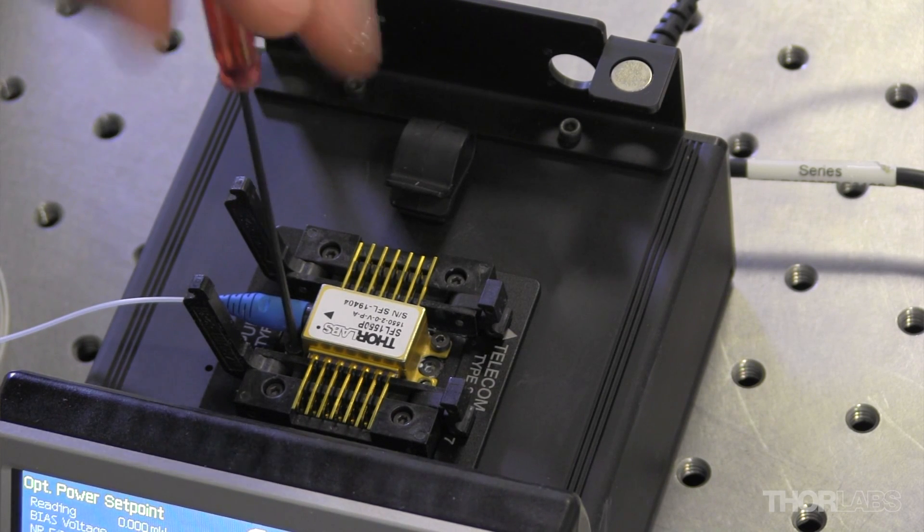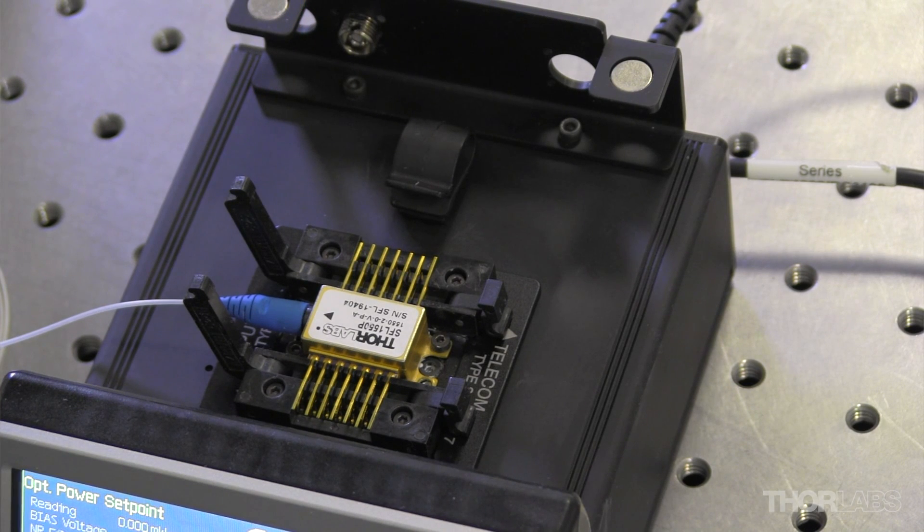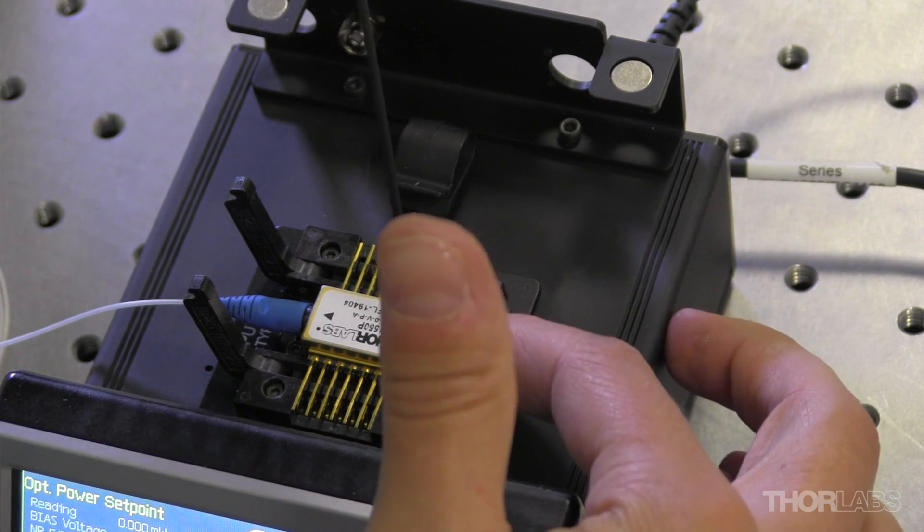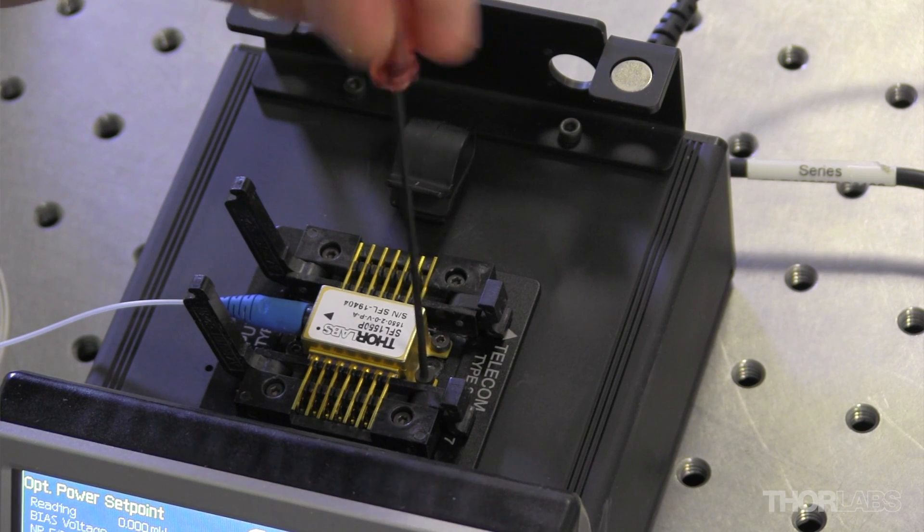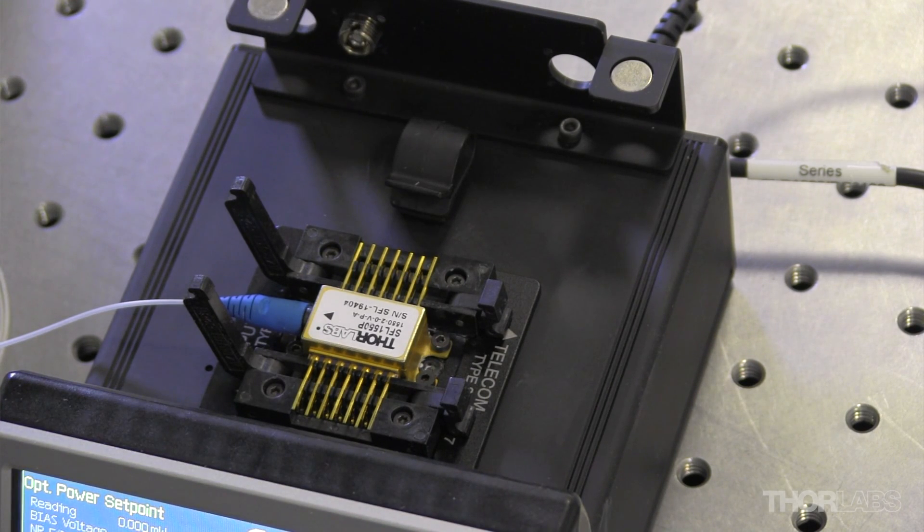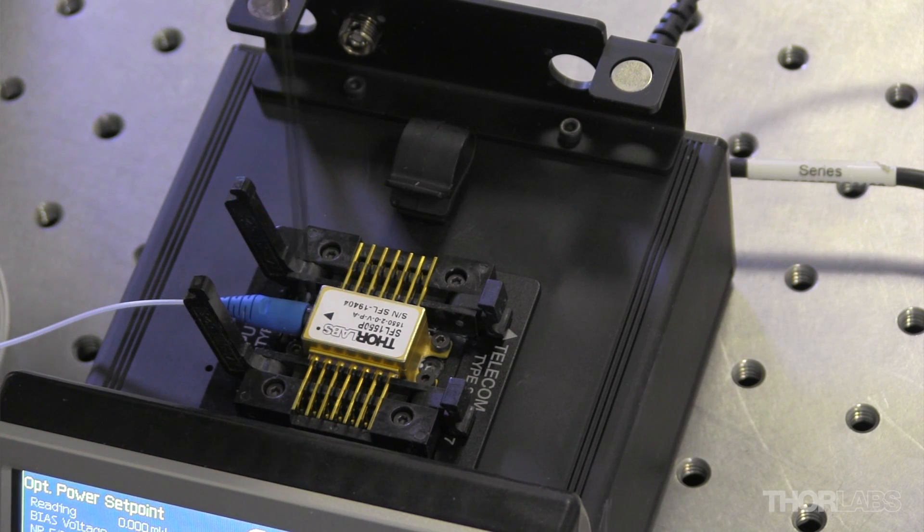And when I tighten these screws, I go down just until I touch the tab of the laser. I don't want to tighten down too much and bend the tabs. Now once the screws are just touching, I'm going to secure them down to the metal.